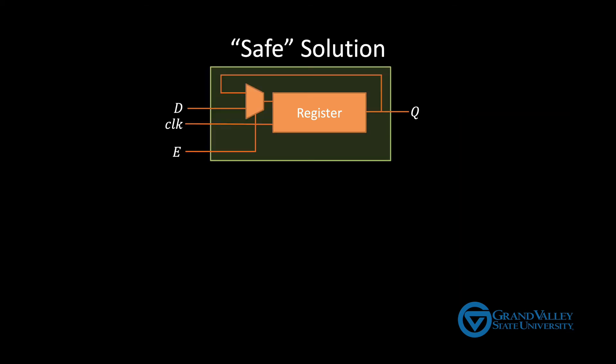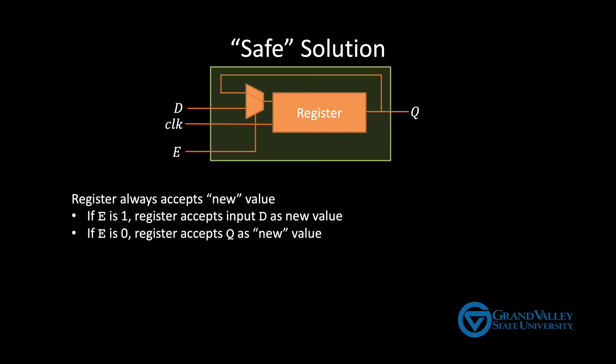So here's a solution. This register accepts a new value on every rising edge. Notice the quotes around new. If enable is one, then the MUX passes through the value currently on D, and that becomes the new value. However, if the enable is zero, then the MUX passes through the current value of the register, so it just reloads its current value, effectively holding its current value. By using this feedback system, we avoid the potential problem of transient values on the enable.